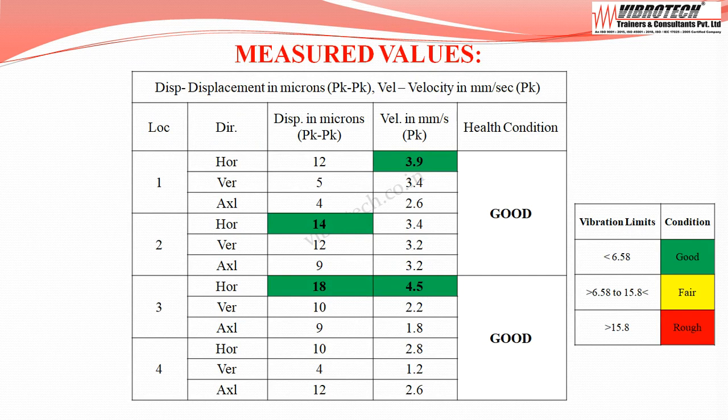The vibration values are maximum at motor non-drive end horizontal, with velocity up to 3.9 mm/s peak and displacement of 14 microns peak to peak. At pump drive end horizontal, velocity is up to 4.5 mm/s peak with displacement of 18 microns peak to peak. The equipment falls under the good category.